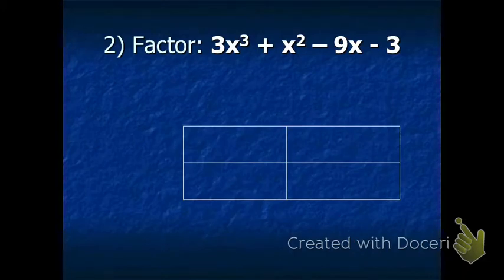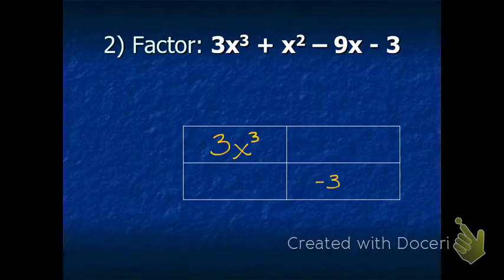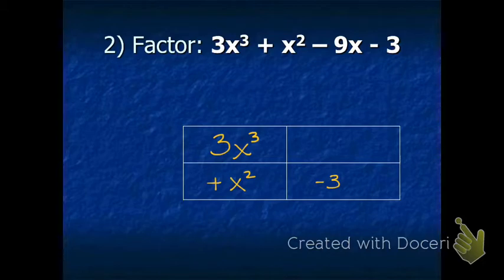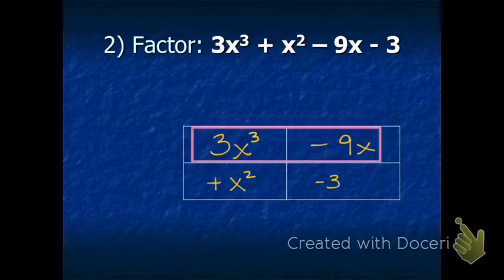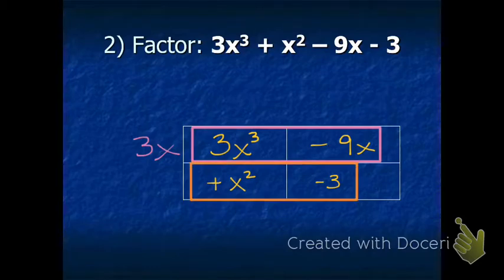We have another four-term polynomial. Put 3x to the third in the top left and negative 3 in the bottom right. It doesn't matter where the second term, x squared, or the third term, negative 9x, go — I'll move them around just to show you. So I put plus x squared in the top right and negative 9x in the bottom left. We have four binomials. The greatest common factor of 3x to the third and negative 9x is 3x. For positive x squared and negative 3, the greatest common factor is plus 1.